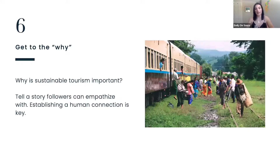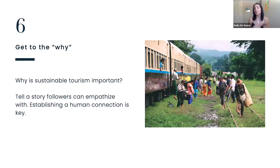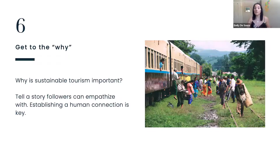The sixth tip is to get to the why. This is one of the most important tips — get to the heart of why sustainable tourism is important. By this I don't mean telling people facts or numbers or statistics about climate change; I mean get to the human why. It can be your own story or somebody else's that you have consent to share, but get to the heart of the why by telling a story that people can empathize with or relate to. People are not inspired to act based on numbers or statistics, but they're inspired to act when they hear a story — about a family that resembles their own, or a story that helps them contextualize how climate change might affect the wellbeing of their children.